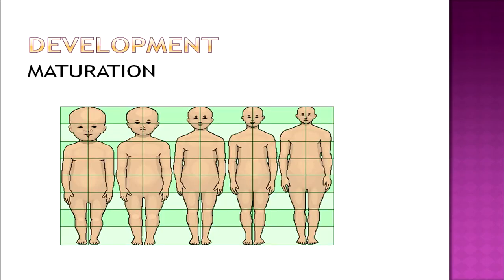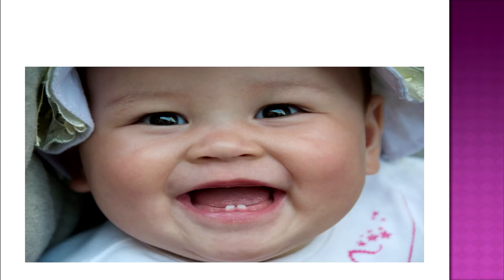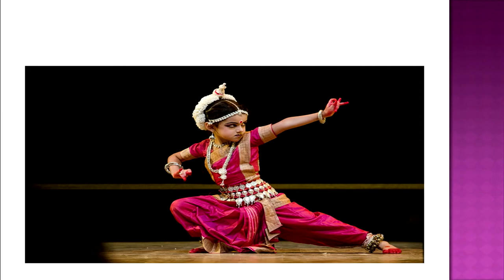Let us talk about how development occurs. There are two main processes that lead to development: the first is maturation and the second is learning. Maturation means the body develops as we grow in age, whereas learning means what we acquire over the years of development. For example, when a baby begins to teethe or starts walking, it is because of maturation. But when a child acquires the skill of performing a specific dance or singing a particular song, it is an act of learning.